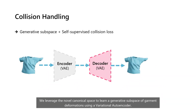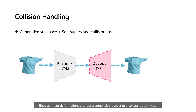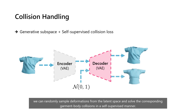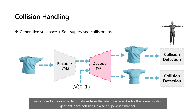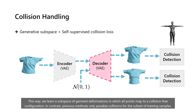We leverage the novel canonical space to learn a generative subspace of garment deformations using a variational autoencoder. Since garment deformations are represented with respect to a constant body mesh, we can randomly sample deformations from the latent space and solve the corresponding garment-body collisions in a self-supervised manner. This way, we learn a subspace of garment deformations in which all points map to a collision-free configuration. In contrast, previous methods only penalized collisions for subsets of training samples.